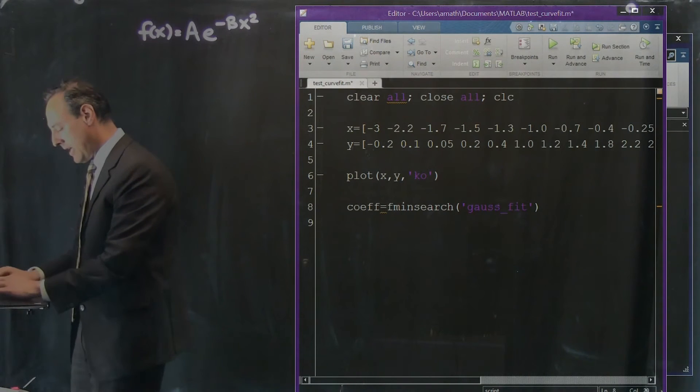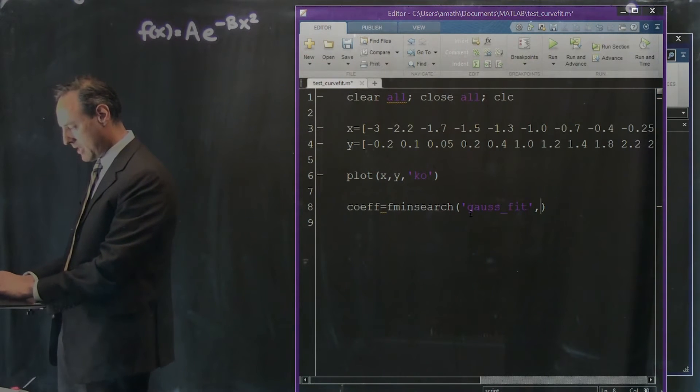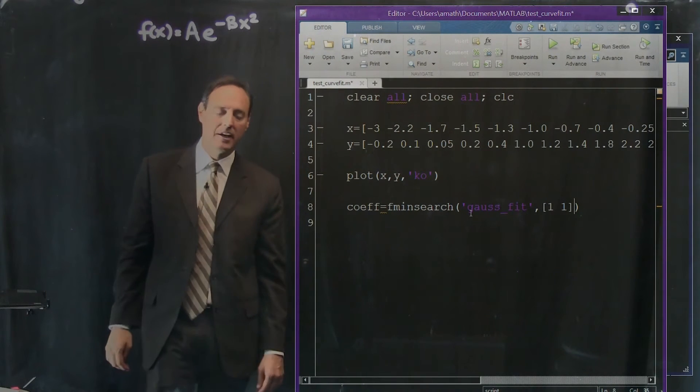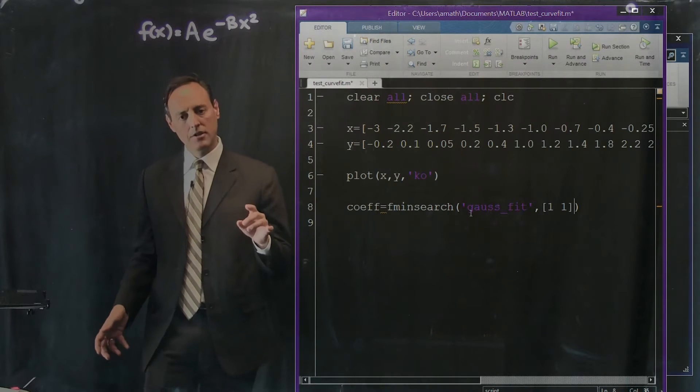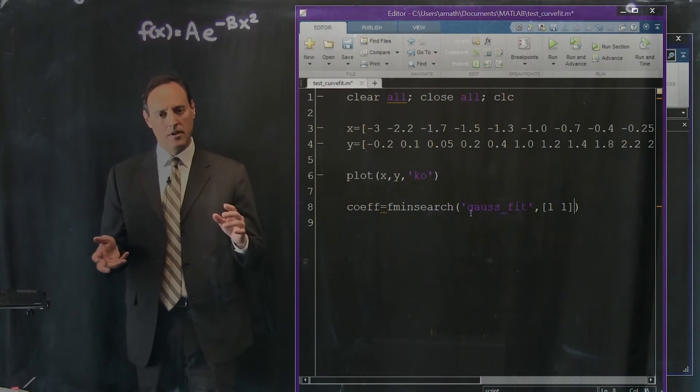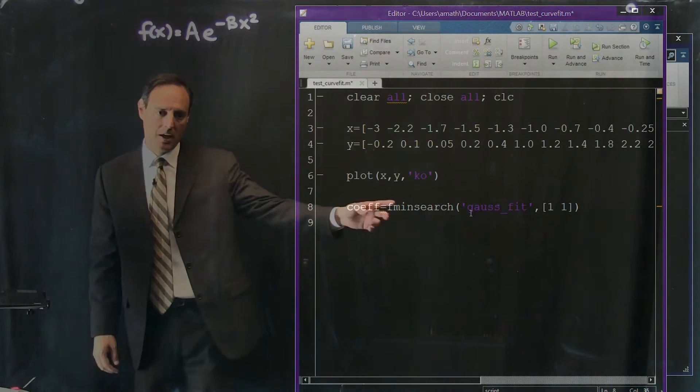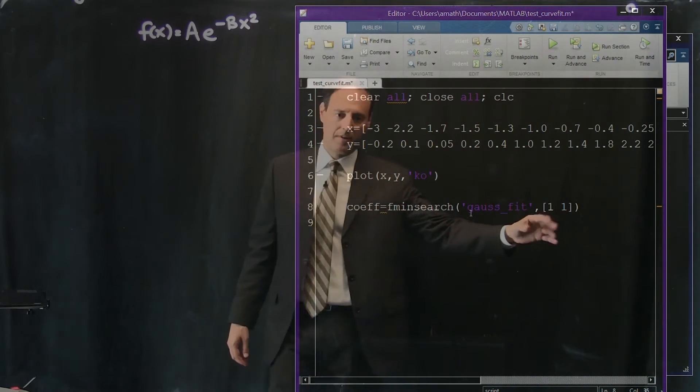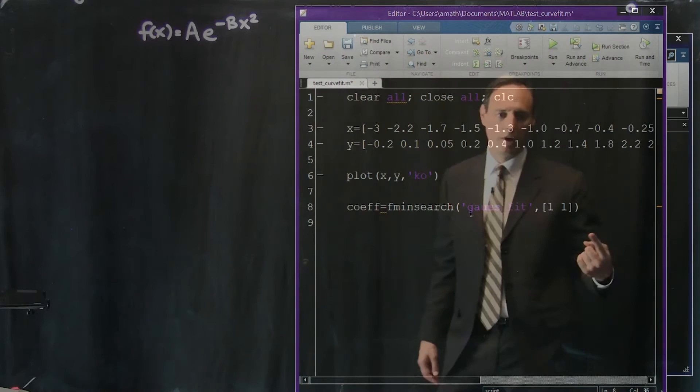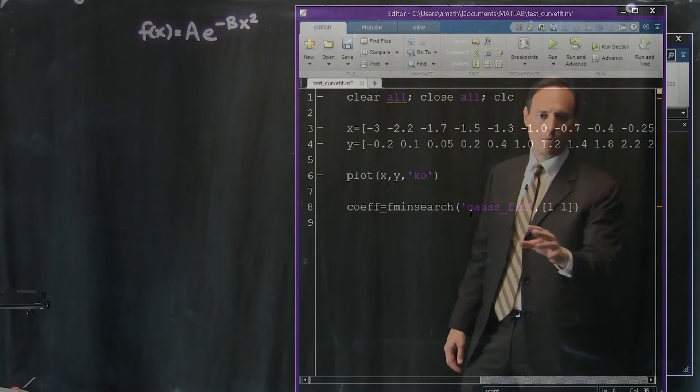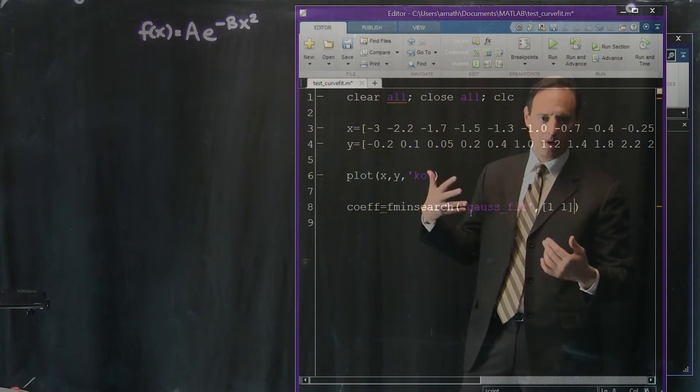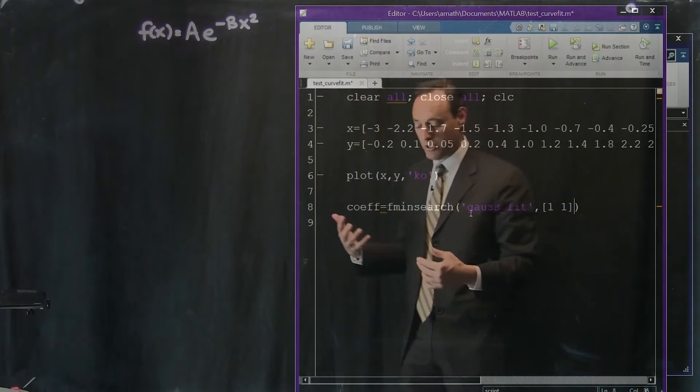And we're going to send in some guesses about the values of a and b. Now this is very important. This is a nonlinear space or nonlinear set of equations trying to solve. This is going to be the most important part of fminsearch in many ways which is: what are your guesses? The guesses become important. I'm going to pick a is about one and b is about one. Are these reasonable? We'll see.